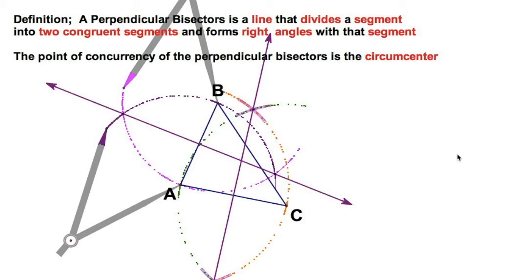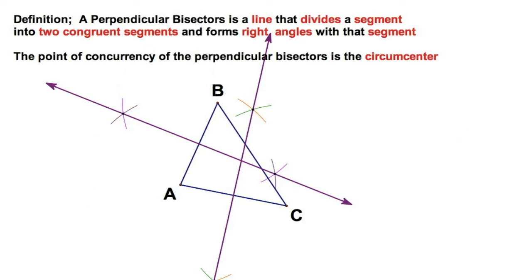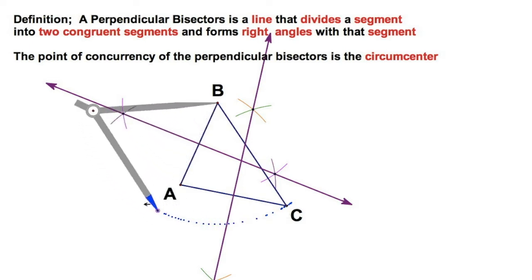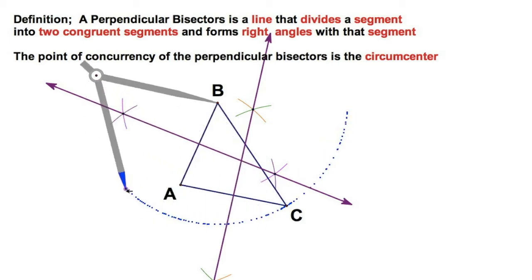Let me clean this up a little bit and get rid of some of those tracer marks. Some constructions tell you to just do two perpendicular bisectors, but I like to do all three. In theory, if it's perfect you only need two, but doing all three accounts for mechanical error — you can average out the error.